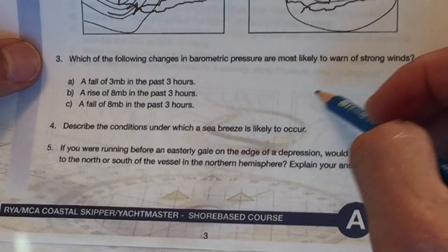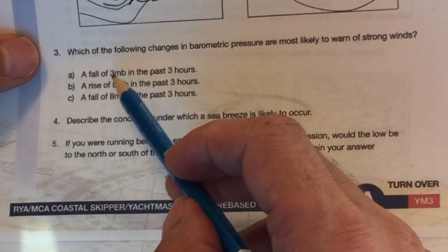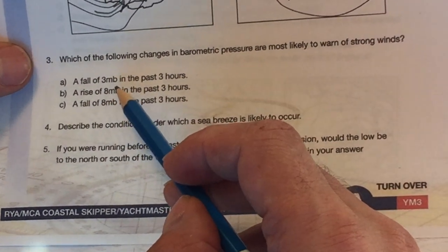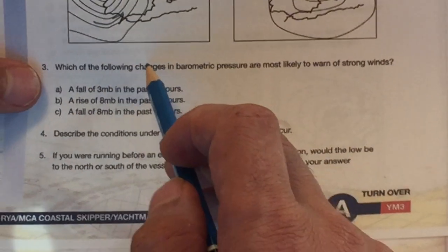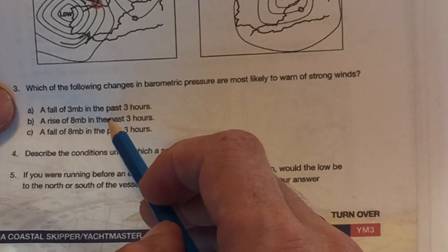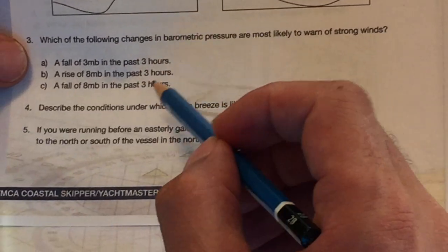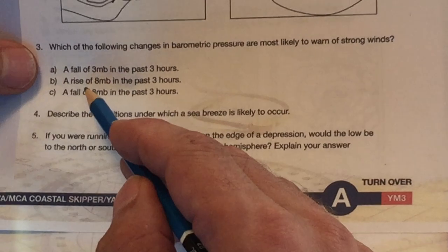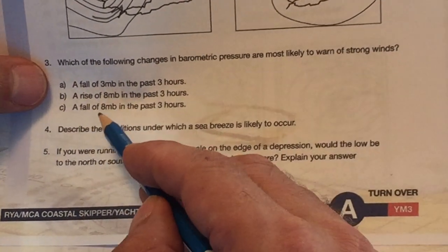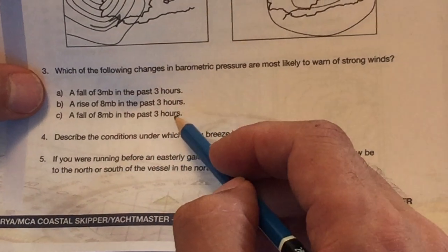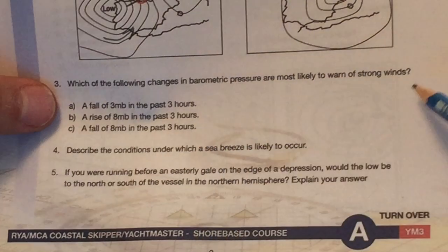Which of the following changes in barometric pressure are most likely to warn of strong winds? A fall of three millibars in the past three hours, no, a rise of eight. Okay, well, we know that strong winds means the barometer will be falling, right? So we can rule that one out and that one because that's not much of a change, so it would have to be C. A fall of eight millibars in the past three hours would most likely warn of strong winds.